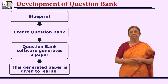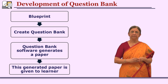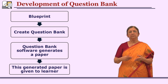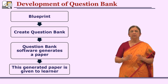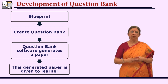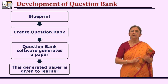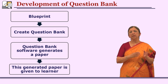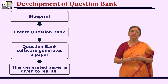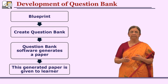The generated paper is given to the learner to solve, which can then be checked. This is called on-demand examination. It is possible because question bank software can generate any number of question papers based on the blueprint and conditions you set — for example, that questions asked last year should not be repeated. Physically, a teacher cannot generate 100 different question papers on demand. Many universities and schools offering distance mode programs use this, as it is challenging for distance learners to come to a specific place at a specific time.